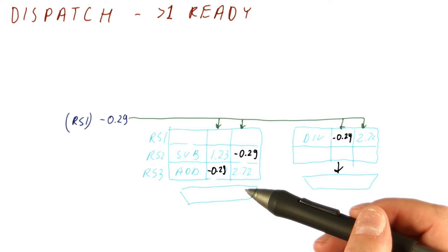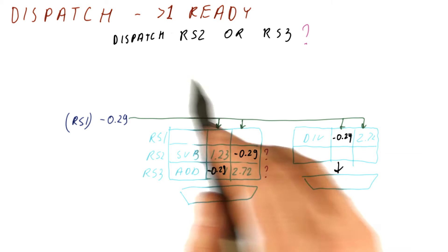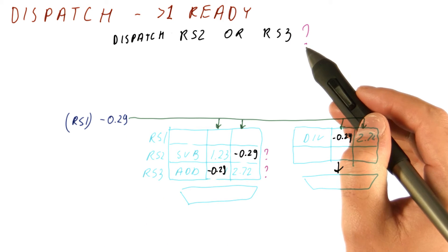Now we need to figure out, are there any good rules about which one should go first? So our question is basically, should we dispatch RS1 or RS2?